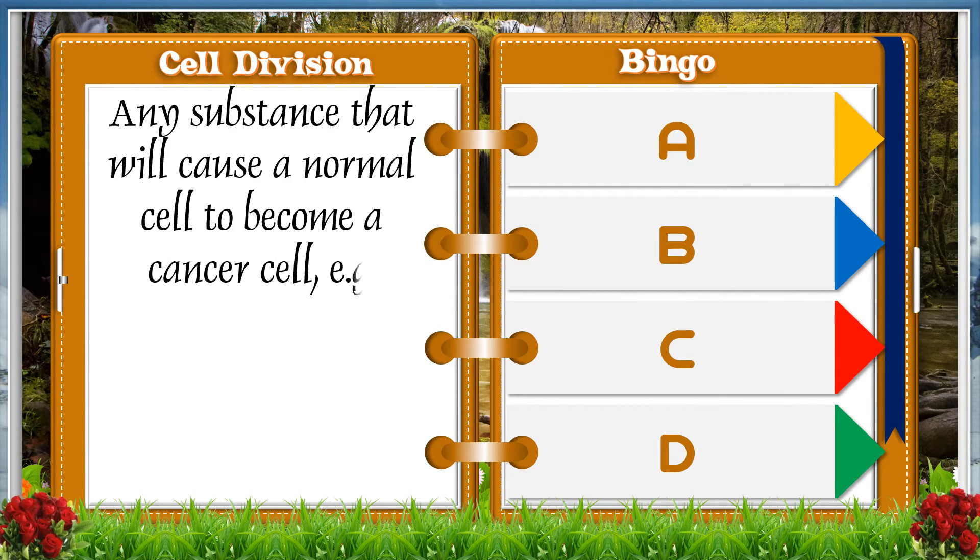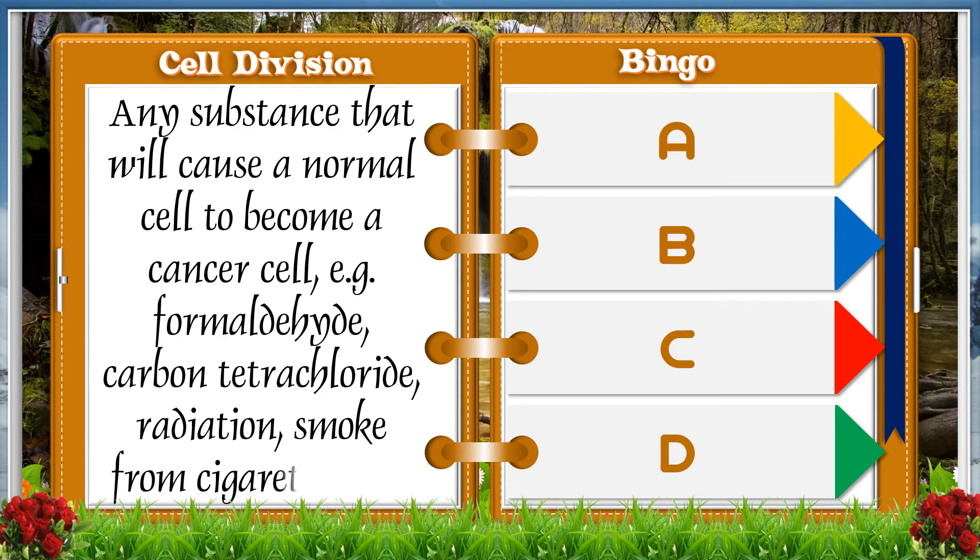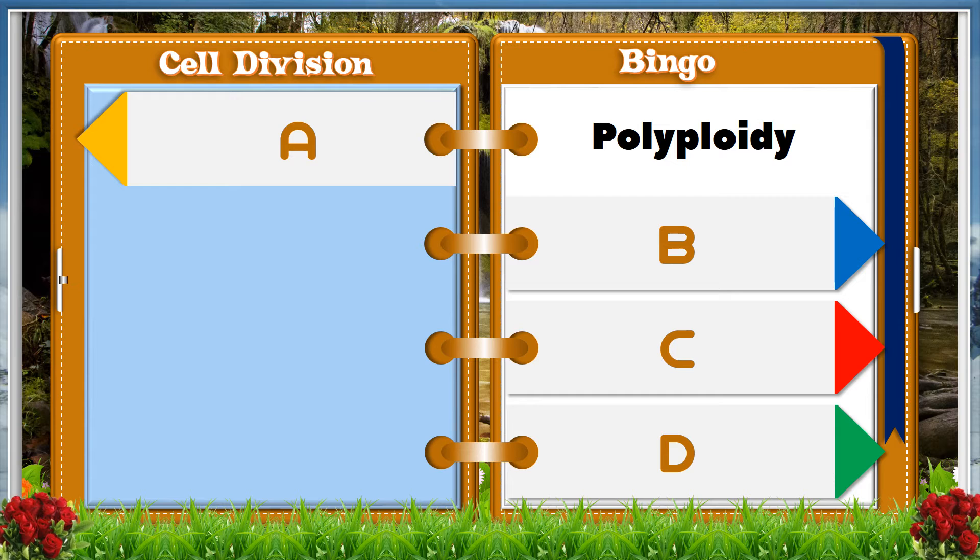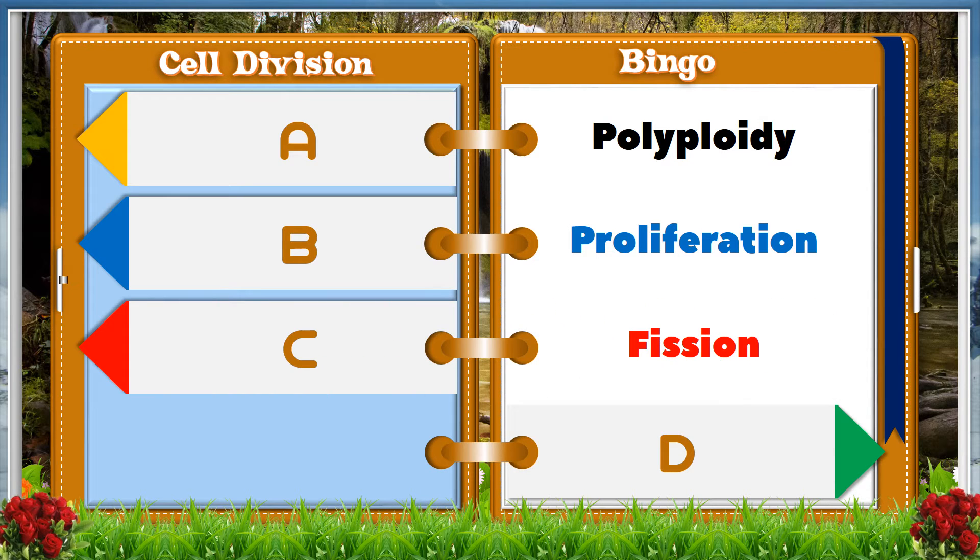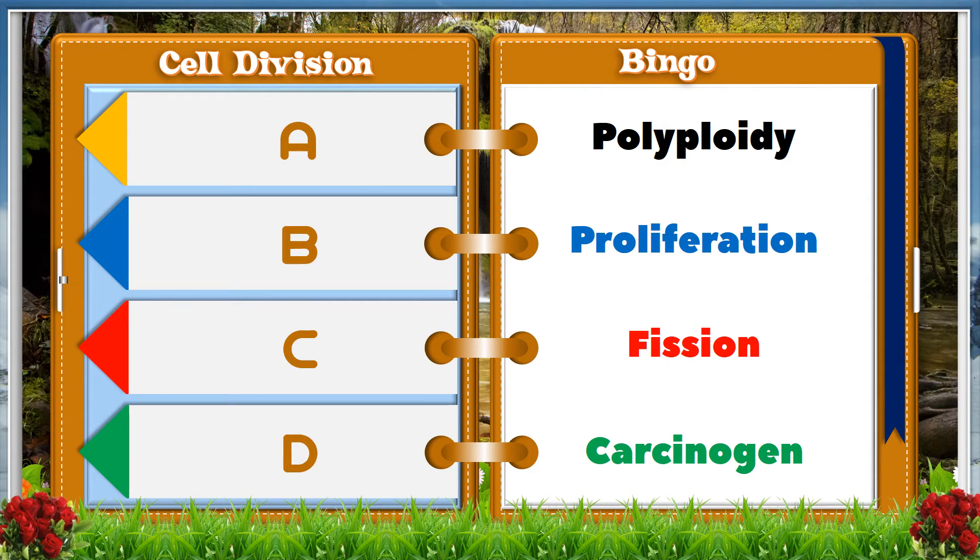Any substance that will cause a normal cell to become cancer cell, for example formaldehyde, carbon tetrachloride, radiation, smoke from cigarette, etc. A polyploid, B proliferation, C fission, D carcinogen.